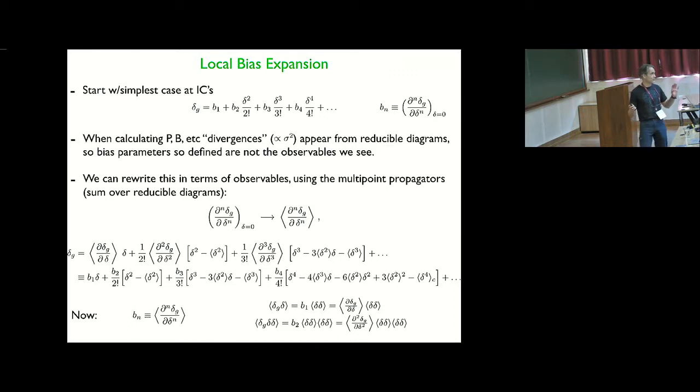A Galilean invariant set of operators which are local in second derivatives of the non-linear potential, gravitational potential and velocity potential that relate galaxy to density fluctuations.